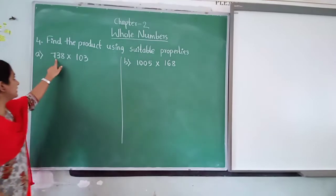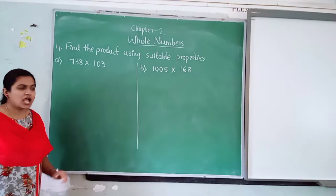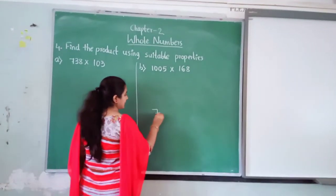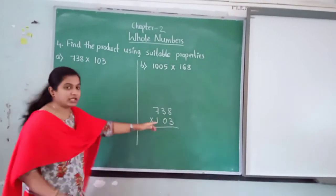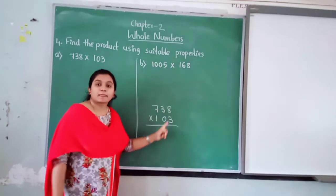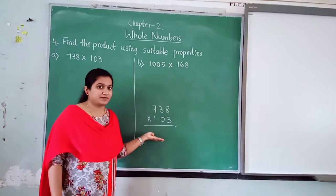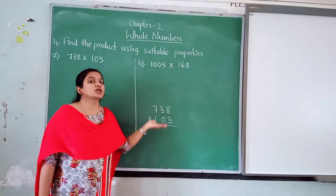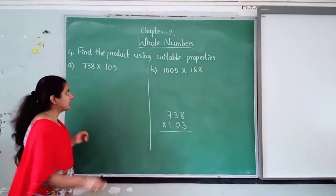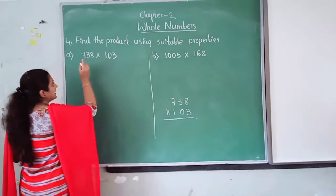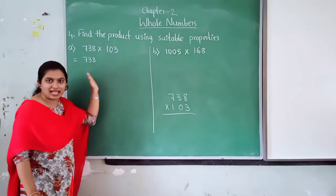We have given you a question: 738 into 103. How to multiply? If you will write like this, if you do the sum like this one by one, it will take 3 minutes time to do it. Instead of this, I will tell you how to do this sum. Look at the sum. 738 is there. 738 as it is you write.